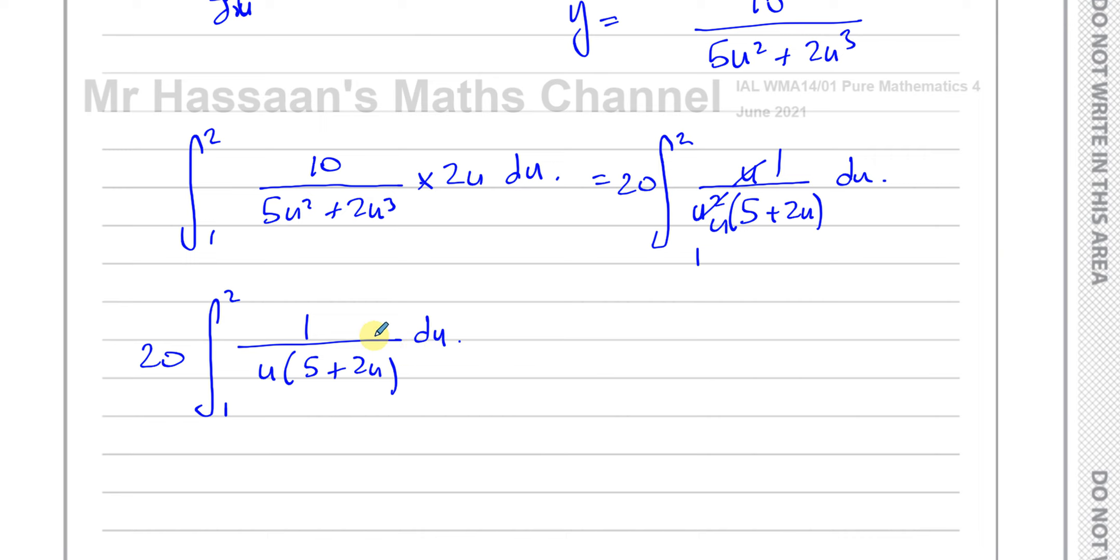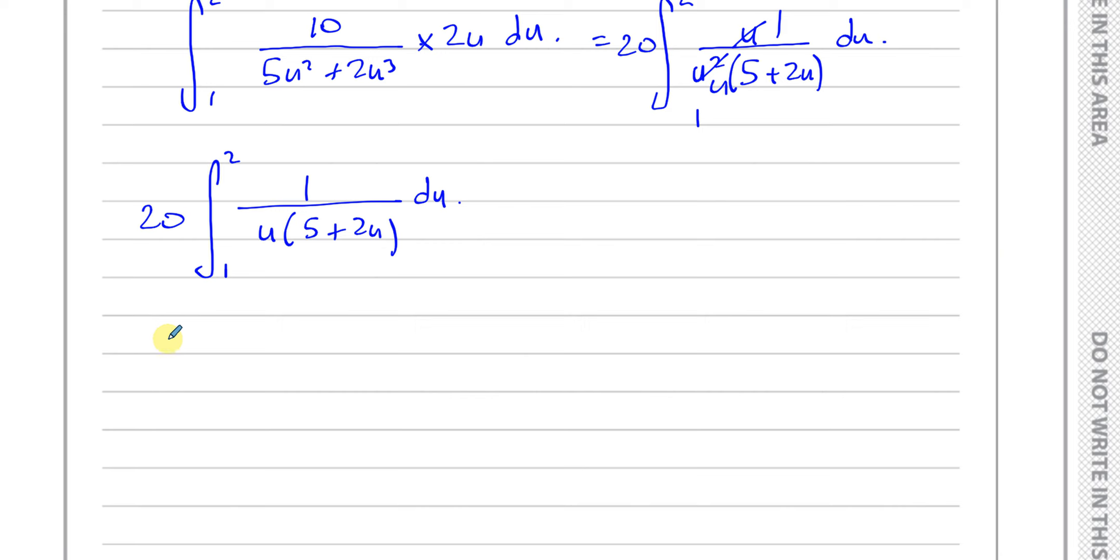Here we have basically a product of linear factors in the denominator. So we can split this up into two separate fractions. I'm going to use partial fractions to split this up. This is a proper fraction because the numerator is linear and the denominator is quadratic. So it will split up into something of the form some constant over u plus some constant over 5 plus 2u.